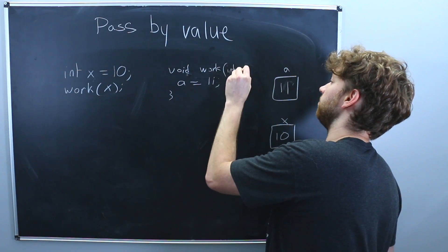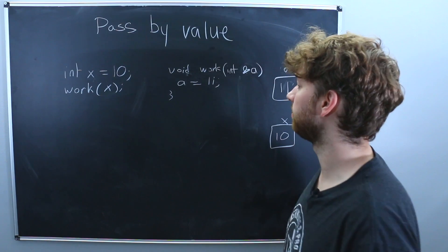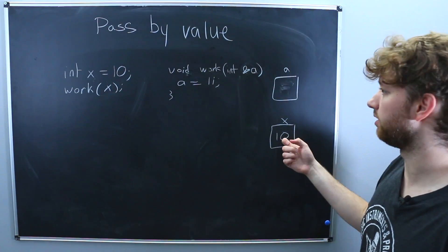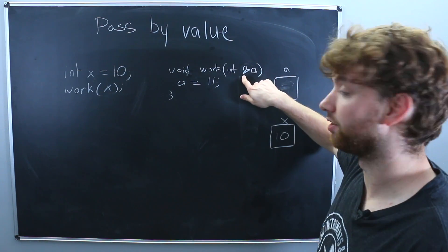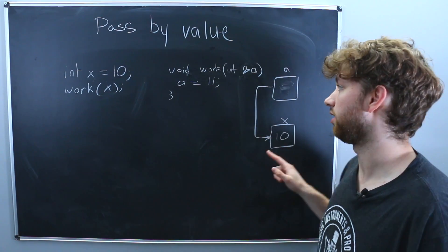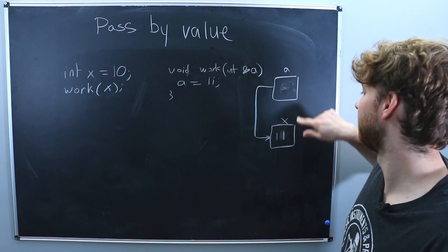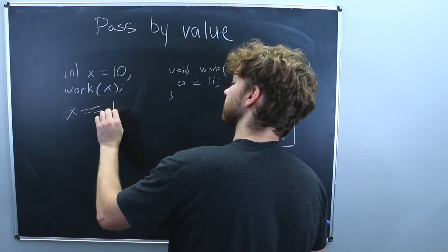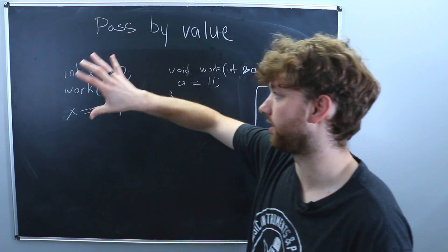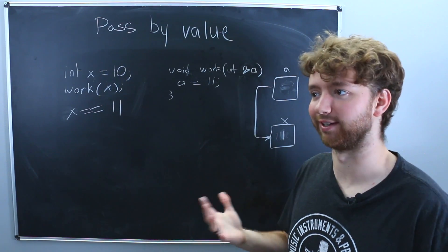On the function definition, the only thing different is that we're going to have a reference here. So ampersand, and then the variable name. So how's this going to look like in memory? Well, we define x with the value 10, then we create this reference variable a, which is going to refer to this location, then we update a to 11, which changes here, not here. So over here in our calling code, x is now going to have the value 11. So the changes inside the function are seen outside of the function.